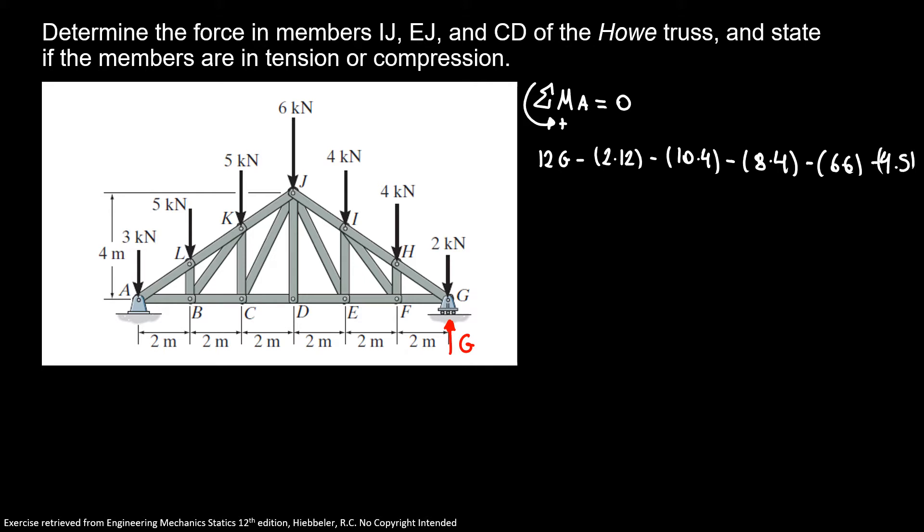And then minus 2 times 5, 3 times 5, sorry. So here I have 12G equals 162, G equals 13.5 kilonewtons.